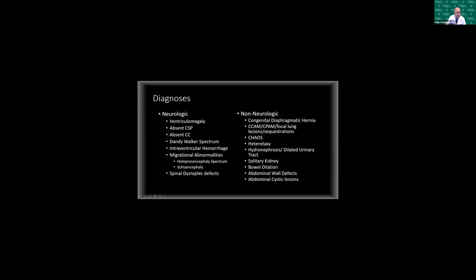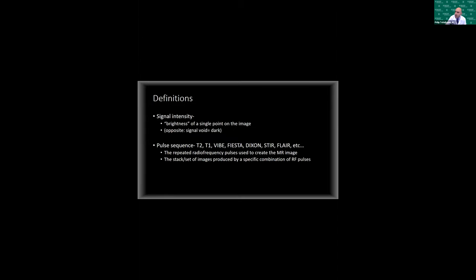Most of the earlier applications were neurologic. This list of diagnoses represents what we see on a day-to-day basis — not rare entities, but every system in the body that we work up on fetal MRI. I want to give a couple of definitions before we start the imaging portion. When I use the term signal intensity, I'm referring to the brightness at a single point on the image. The opposite is a signal void, which is darkness. When I use the term pulse sequence, I'm referring to the radiofrequency pulse or combination of pulses, or the stack of images produced by those RF pulses.